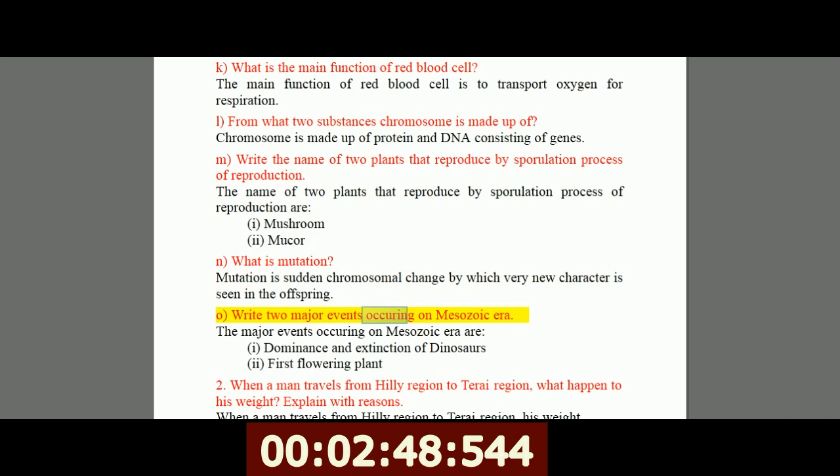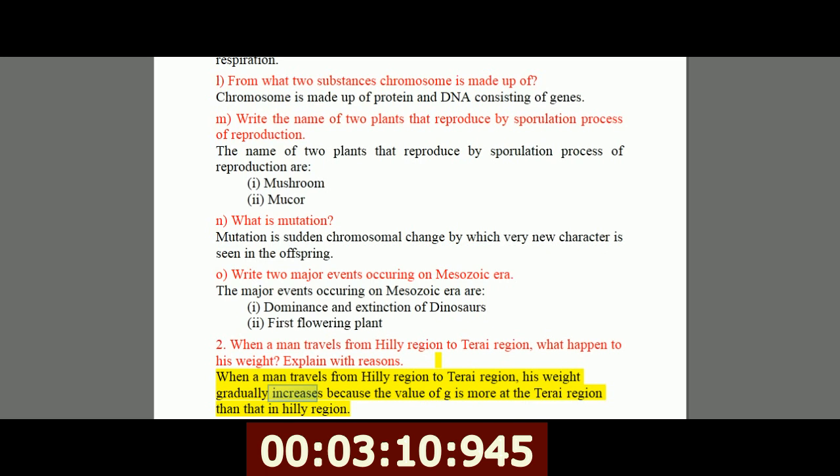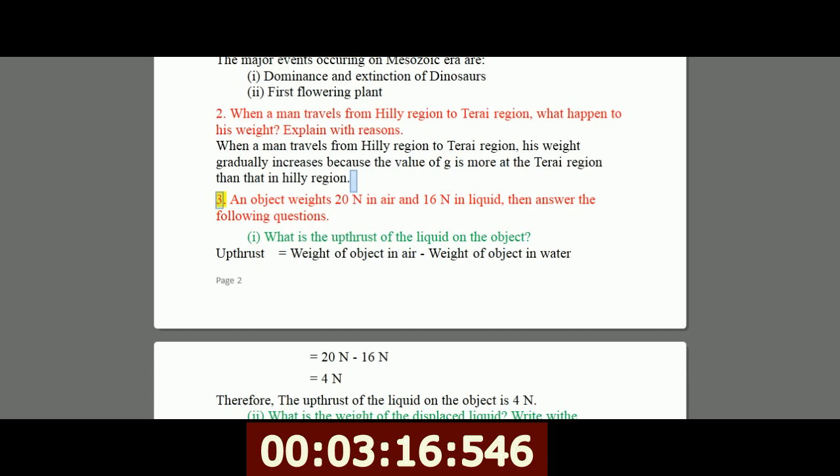O, write two major events occurring in mesozoic era. The major events occurring in mesozoic era are: I, dominance and extinction of dinosaurs, II, first flowering plant. 2. When a man travels from hilly region to terai region, what happened to his weight? Explain with reasons. When a man travels from hilly region to terai region, his weight gradually increases because the value of G is more at the terai region than that in hilly region.